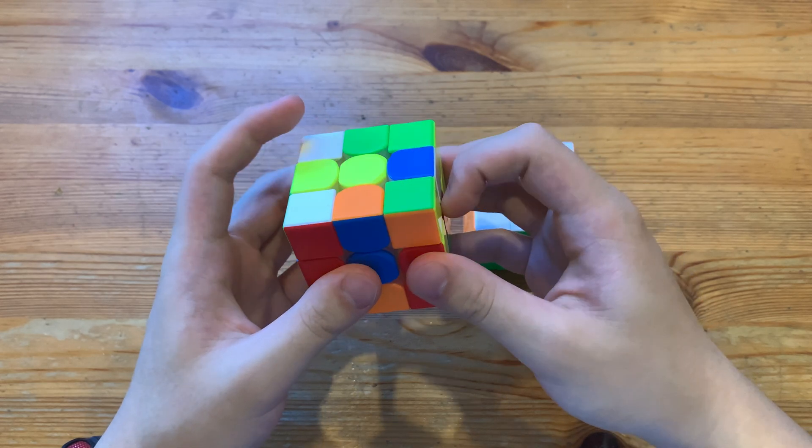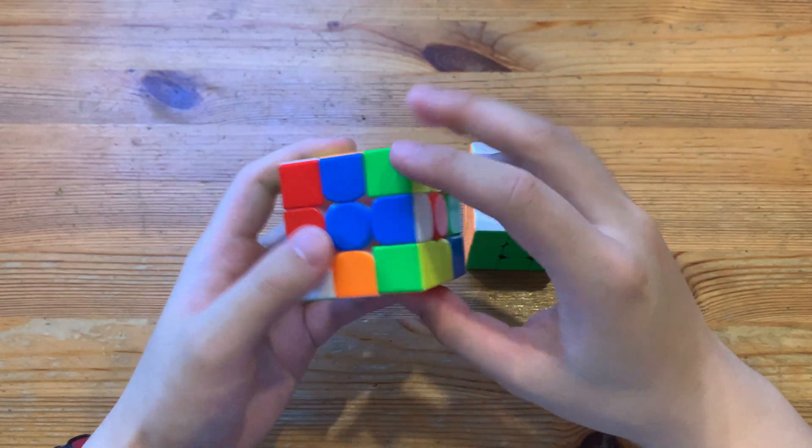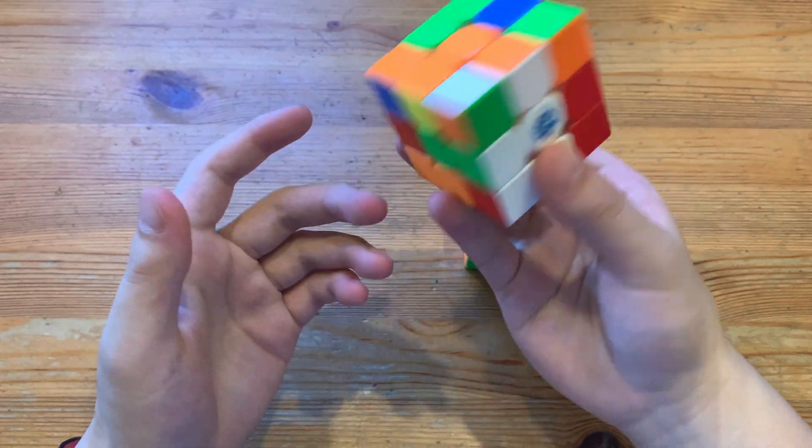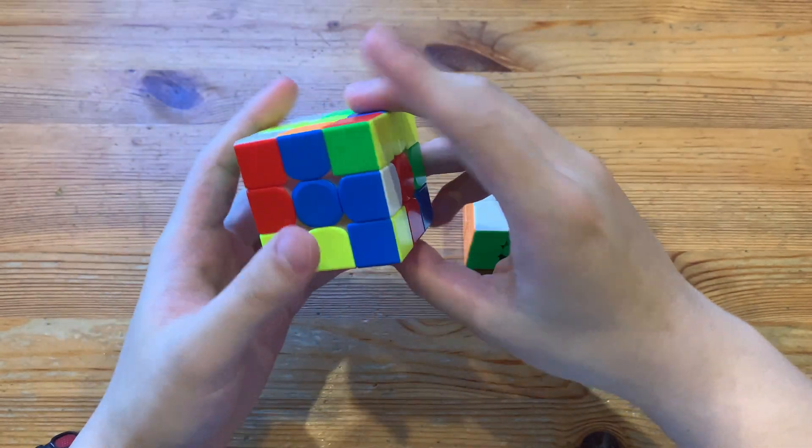And then u r prime to put this edge over here, and then d prime, and then do f to insert the corner, like that.